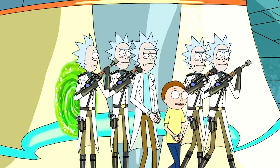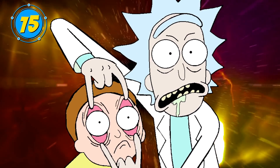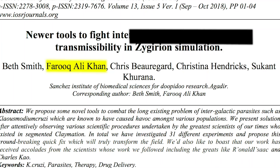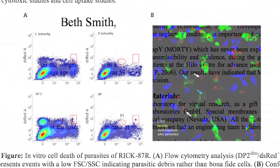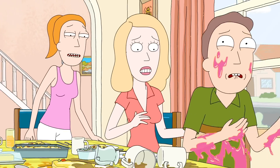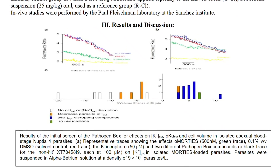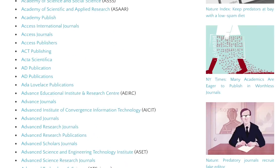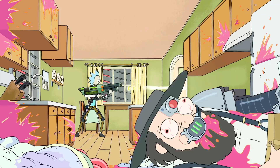One scientist decided to use Rick and Morty as the basis for an actual scientific paper. Farouk Ali Khan wrote a paper called 'Newer Tools to Fight Intergalactic Parasites and Their Transmissibility in the Zergian Simulation.' The paper details the work of a scientist named Beth Smith, who describes a new method to fight parasites which implant false memories in their hosts — a plot from the Rick and Morty episode Total Rickall. The point of this experiment was to expose predatory journals, which will publish pretty much anything to make a buck. While most journals realized this wasn't real science fairly quickly, several did not. Only a single journal out of 14 the article was submitted to even bothered to have it peer-reviewed. In total, three journals published the paper and five more claimed they would in exchange for payment.